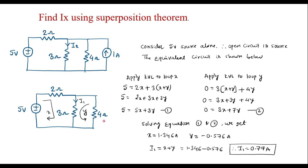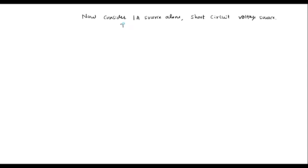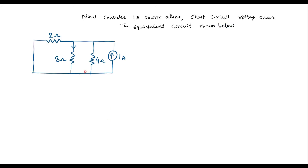This is the current which flows through the 3-ohm resistor when we consider the 5V source alone. Now let us find the current through the 3-ohm resistor considering the 1-amp source alone, by shorting the 5V source. This is the equivalent circuit when we consider the 1-amp source alone. We will assume that the current through the 3-ohm resistor is I2. We can observe that the 2-ohm, 3-ohm, and 4-ohm resistors are in parallel.